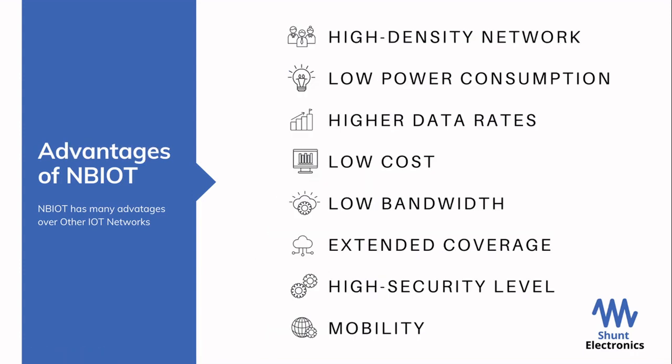Now let's look at the advantages of NB-IoT. From our comparison, we found: first, it is a high-density network — its bandwidth is higher than LoRa and Sigfox, so it can accommodate a higher number of devices. It has low power consumption, high data rates, low cost, low bandwidth, extended coverage, and a high security level as a cellular network, making it more secure than LoRa and Sigfox. It also has mobility — just as with cellular networks, when an NB-IoT node moves from one place to another, it remains always connected.